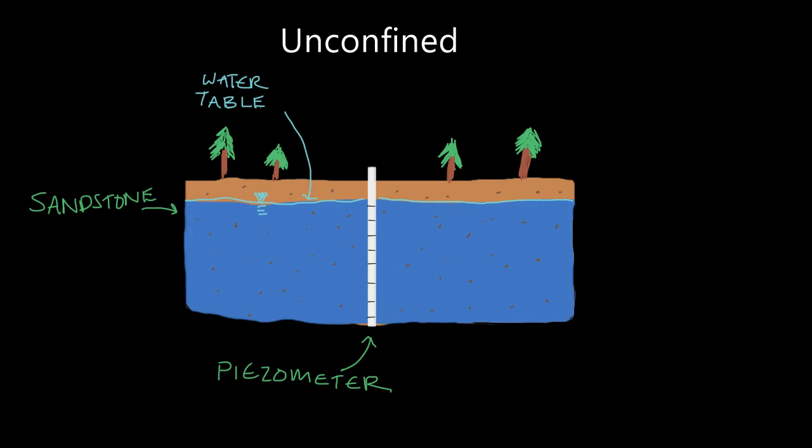You may say, well that's simple — why are we even making a distinction between the water table and the potentiometric surface? In an unconfined aquifer, they're the same, so we don't really need to make a distinction. But in a confined aquifer, the water table and the potentiometric surface are not the same — there will be a difference in elevation between the two.